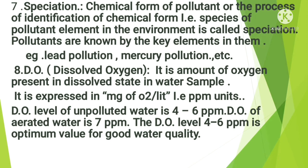The next term is speciation — the chemical form of a pollutant, or the process of identifying the chemical species of a pollutant element in the environment. Pollutants are known by the key element in them; for example, lead pollution has lead as the key element, and mercury pollution has mercury as the key element.